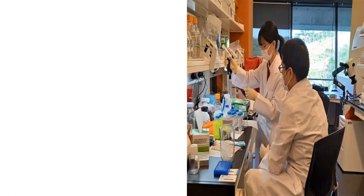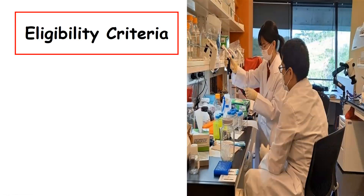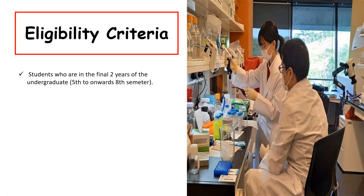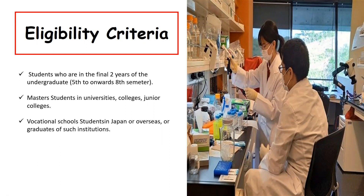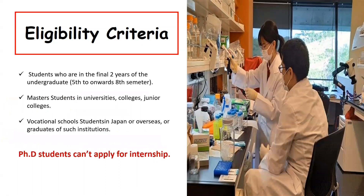Regarding the eligibility criteria to apply for this internship: students who are in the final two years of their undergraduate degree — from fifth semester to eighth semester — are eligible to apply. Students studying a master's degree at a university, college, or junior college can also apply. Vocational students currently studying in Japan or overseas can also apply. However, PhD students cannot apply for this internship.